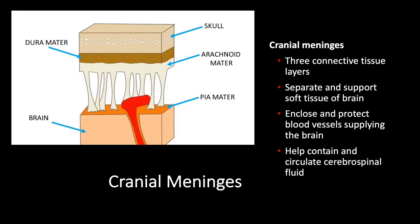The cranial meninges consist of three connective tissue layers and act to separate and support the soft tissue of the brain. They also enclose and protect the different blood vessels that supply the brain, and they help contain and circulate the CSF. Moving from deep to superficial, the deepest layer is the pia mater, then the arachnoid mater, and on top of that we have the dura mater.